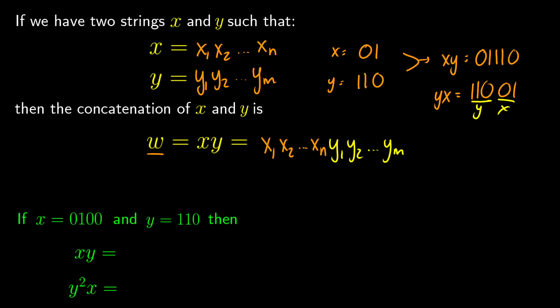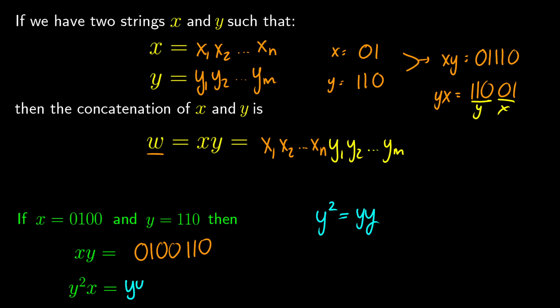Here's another example: if x is 0, 1, 0, 0 and y is 1, 1, 0, then xy is 0, 1, 0, 0, 1, 1, 0. We can also introduce exponent notation: y² just means y concatenated with itself. So y²x means y, then y, then x. In this case that's 1, 1, 0, 1, 1, 0, 0, 1, 0, 0.